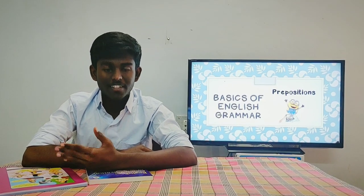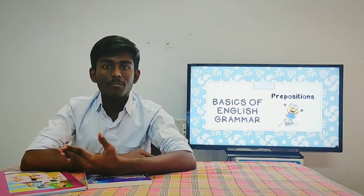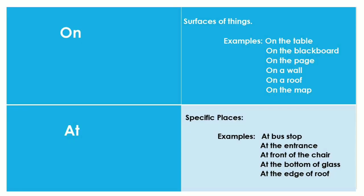Listen carefully. In a hall, people used to take rest. In the box, I have three chocolates. In a school, students get education. The second preposition used for place is 'on.' The preposition 'on' is used to mention the surfaces of things. Examples: on the table, on the blackboard, on the page, on a wall.